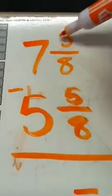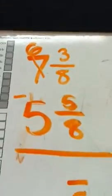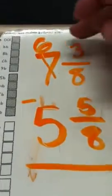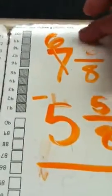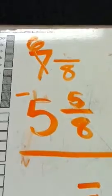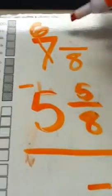So since I can't subtract the three, what I can do is I can borrow from the seven, make it a six, and then this three, I'm adding one whole to it. So in this case, since I have eights, one whole would be eight pieces. So since I had a three here and I'm adding eight, I now have an eleven.